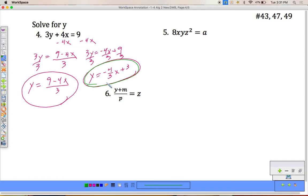Alright, number 5. 8xyz squared equals a. We're still solving for y. So I need to do whatever I can to get that y term alone. Alright, so it says 8 times. So to get rid of that 8, I'm going to divide by 8. Also, I have an x times. I'm going to divide by x and the z squared. So I'm going to divide by z squared.